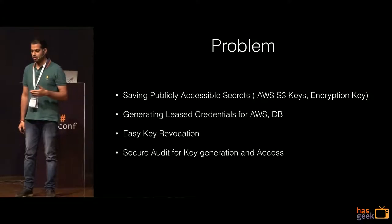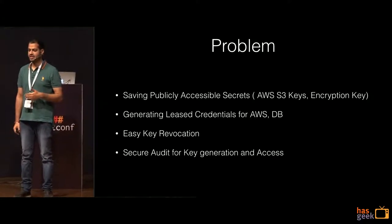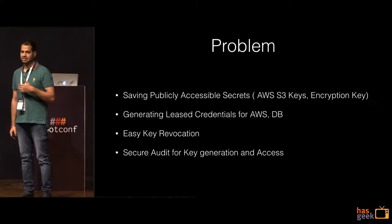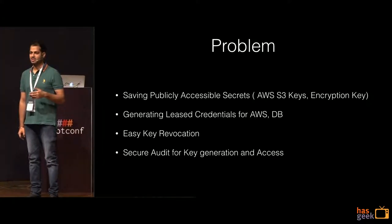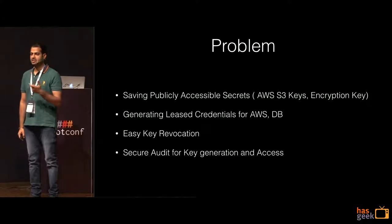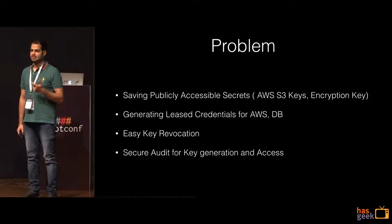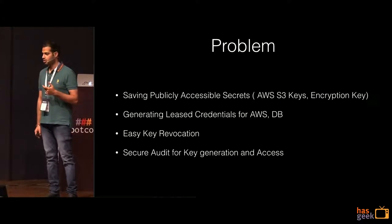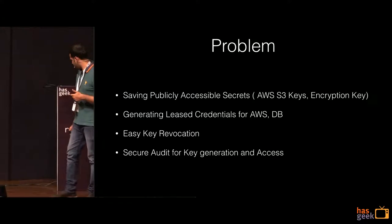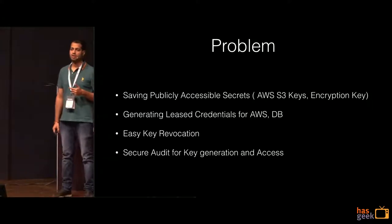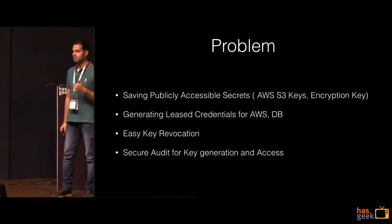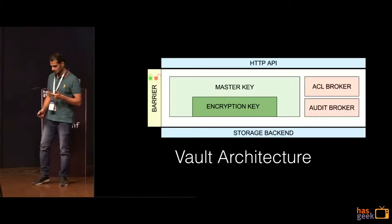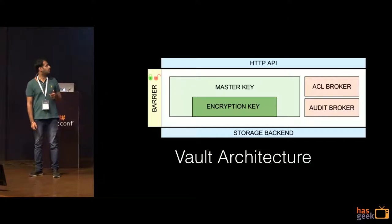The second problem is generating least-privilege credentials for AWS. Any system administrator would know that once you give a developer a key, it's gone forever — it's not time-limited. Third is having a single place to revoke all those keys or credentials. Fourth is maintaining an audit of key generation: how keys are generated, when they are generated, for whom, and how they were accessed.